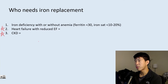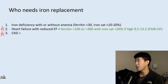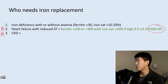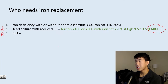With heart failure with reduced ejection fraction, we use more lenient goals. If ferritin is less than 100, treat for iron deficiency. Or if ferritin is less than 300 with an iron saturation less than 20%, treat as well. This is based on the FAIR-HF trial, which found that quality of life and six-minute walking test improved with IV iron treatment in patients with mild anemia and symptomatic heart failure.